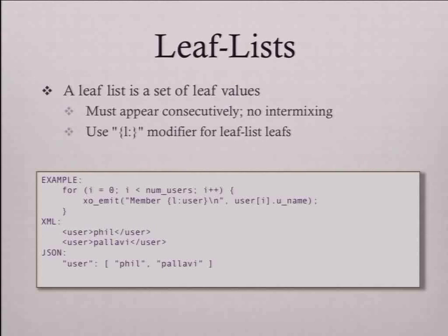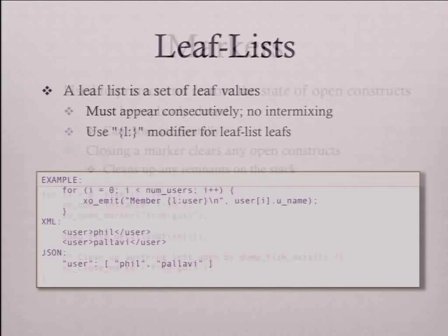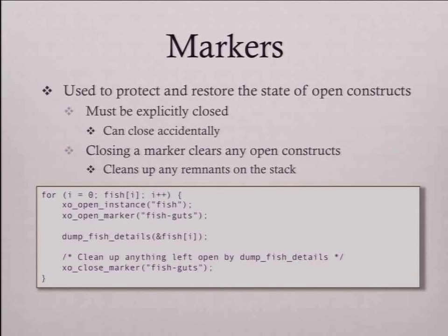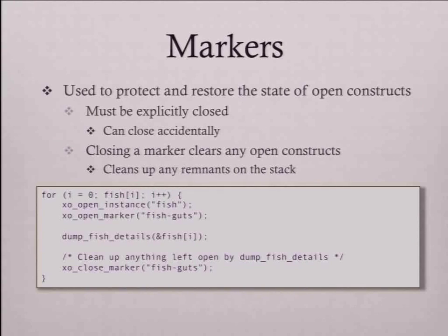The last of the four constructs is a leaf-list. A leaf-list is just a modifier on the element - you simply go through your list and emit your leaf-list elements. Markers are a thing you can throw on the internal stack of LibXO to say 'protect me'. If you try to pop past that marker, you'll fail and get a warning. If you pop a marker and there's anything left on the stack, it'll clean up for you. It's a way of protecting you from code that you call and protecting you from yourself.